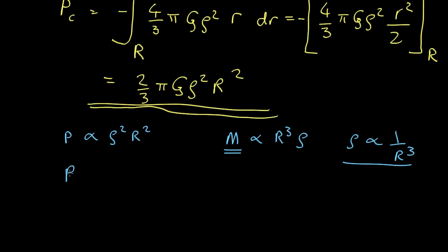So what this means is the central pressure is proportional to density squared and density is proportional to one over r cubed. So that's one over r to the sixth times r squared, so that's proportional to r to the minus fourth power.